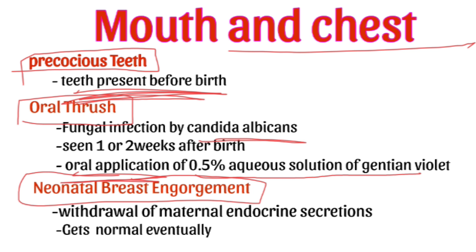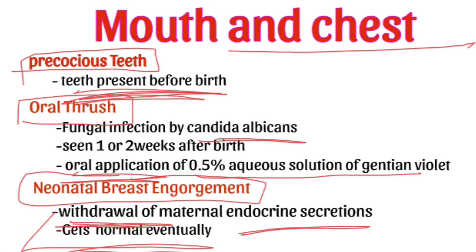Next, neonatal breast engorgement — swelling in the breast area seen in both genders, whether boy or girl. This occurs because of endocrine secretion: the mother provides lots of hormones, and due to the withdrawal of those hormones, the baby's breast becomes engorged. No need to worry, it will get normal eventually.